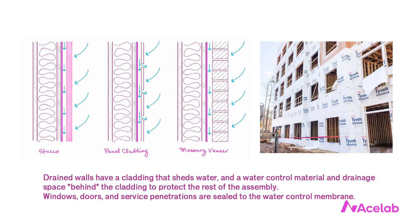Let's start with drainage. Most walls in North American residential and commercial construction are drained walls. Drained walls have a cladding that sheds water and a water control material and drainage space behind the cladding to protect the rest of the assembly. Windows, doors, and service penetrations are sealed to the water control membrane. The building code refers to this membrane as the water-resistive barrier, or WRB.